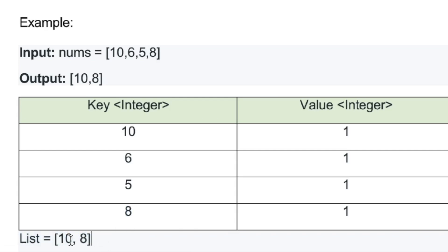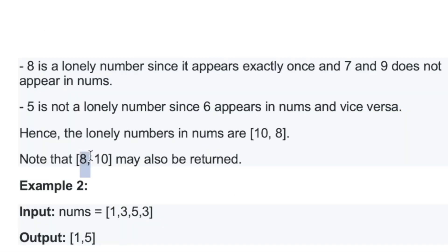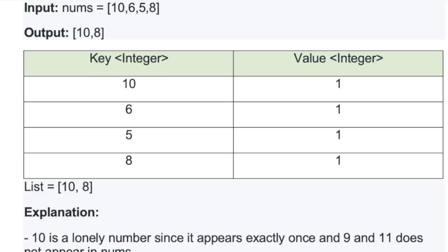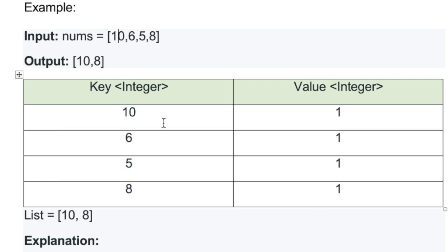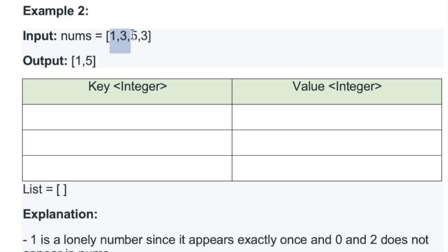The final list contains 10 and 8, which we return as output. Note that 8 or 10 can appear in any order because hash map entries are not placed according to order of occurrence — they're randomly placed. If you use a LinkedHashMap, entries are ordered by insertion. Since order may vary, a regular hash map is fine here.